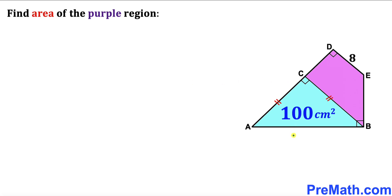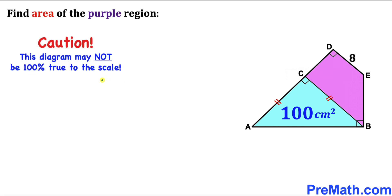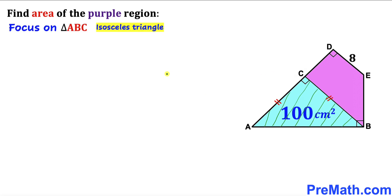In this video we have a compound shape that consists of a blue isosceles triangle ABC and a purple trapezoid BEDC, as shown in the diagram, such that the area of the blue triangle is 100 centimeter square, the side length DE is 8 centimeter, and our task is to calculate the area of the purple trapezoid. Please keep in mind that this figure may not be 100% true to scale. Let's get started.